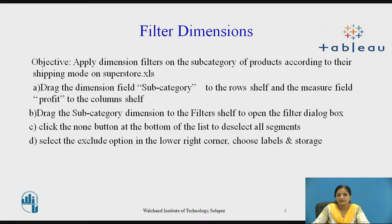Let us start with filter dimensions. The objective is to apply dimension filters on the sub-category of products according to their shipping mode on the data source superstore.xls. This superstore.xls comes with Tableau, so we will be using the same data source. To achieve this objective, we have to perform the following steps.